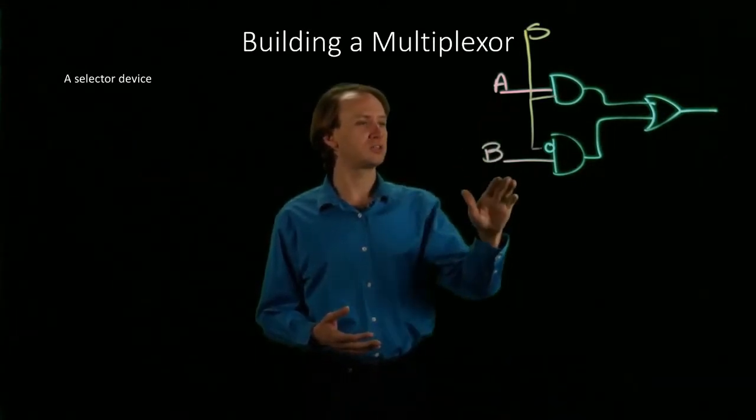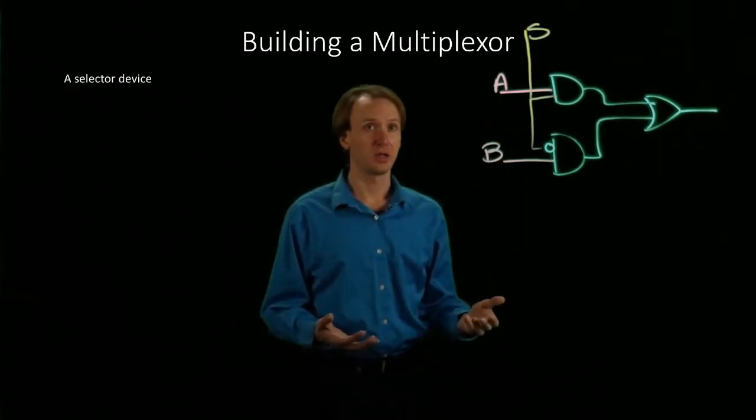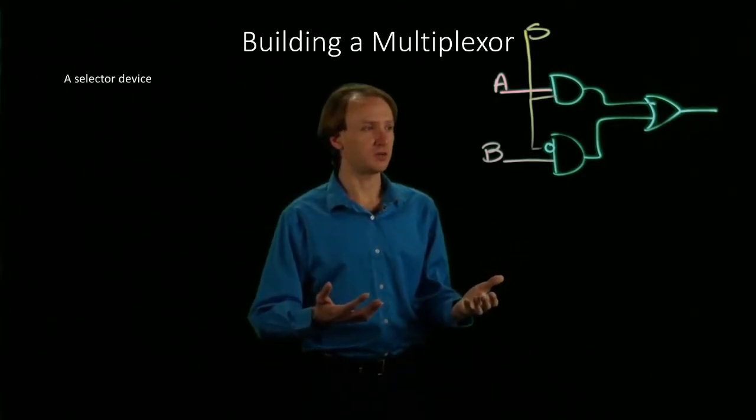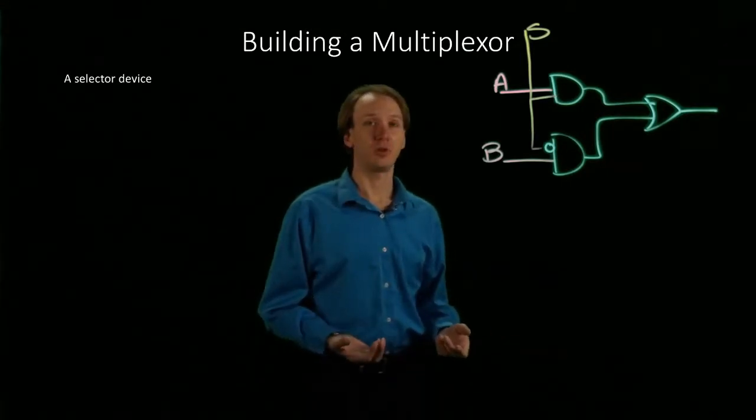However, in this case, we only have one bit on each of these lines. A and B are just both one bit. So if we want to build a bigger multiplexer, one that can handle full 32 or 64-bit numbers, we're going to need something a little more complex.